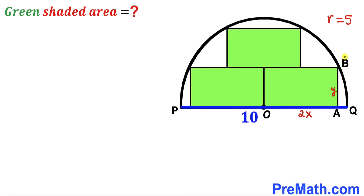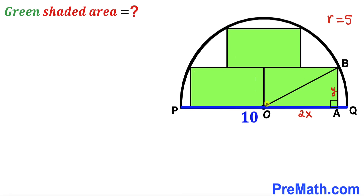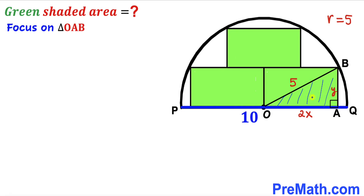The width AB of this rectangle I'm going to label as y. Please bear in mind that point B is the point of tangency, and this angle is 90 degrees since we are dealing with a rectangle. Now I'm going to connect center O with point B. We can see that OB is the radius of this semicircle, and we know the radius is 5, so OB equals 5. Now let's focus on right triangle OAB.